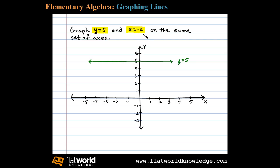That's a line where all the x values are negative 2. Here we have x equals negative 2. Now we've graphed both of the lines on the same set of axes. Where do these two lines intersect? We can see here they intersect at the point negative 2 comma 5.